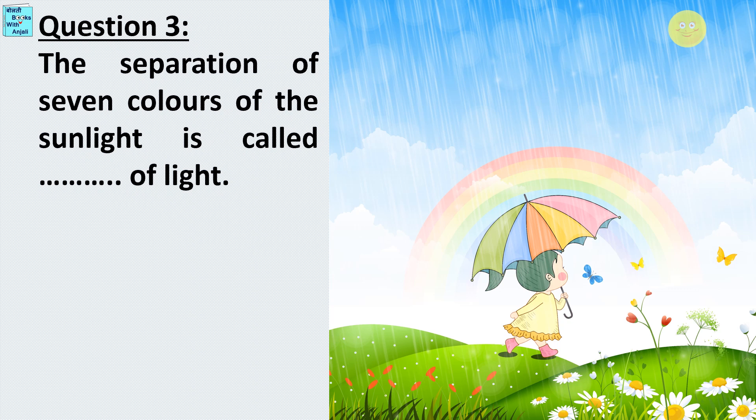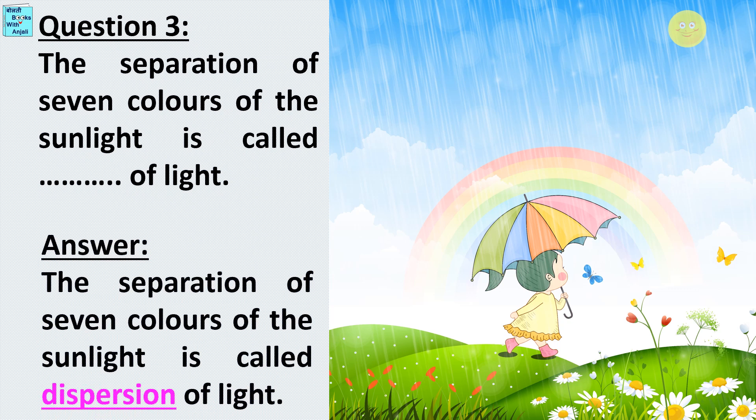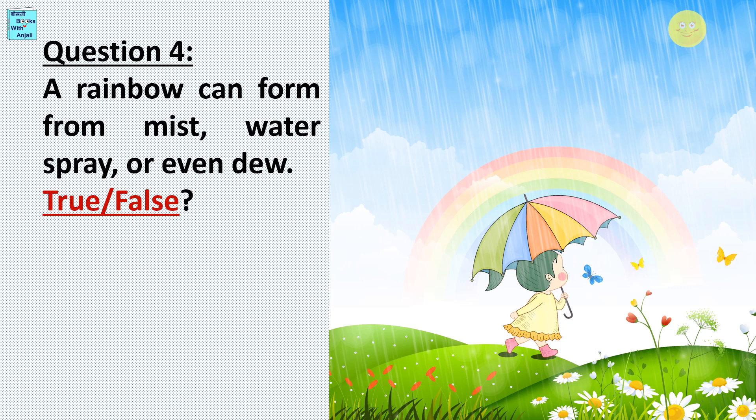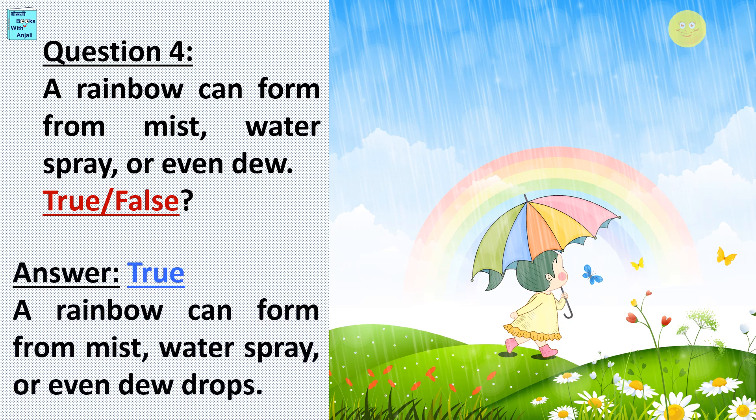Question 3: The separation of 7 colors of the sunlight is called blank of light. Answer: The separation of 7 colors of the sunlight is called dispersion of light. Question 4: A rainbow can form from mist, water spray, or even dew drops — is it true or false? Answer: It is true.